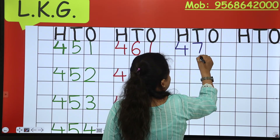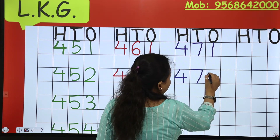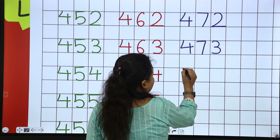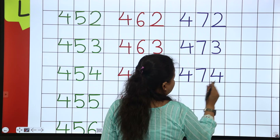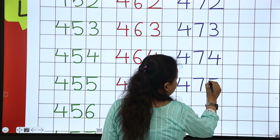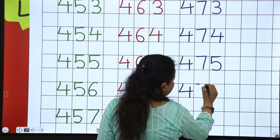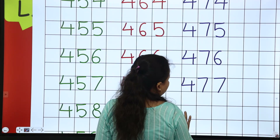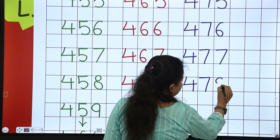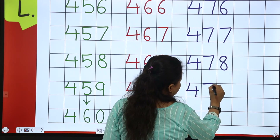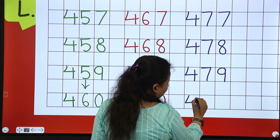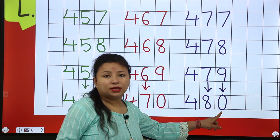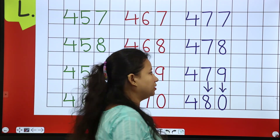471, 472, 473, 474, 475, 476, 477, 478, 479. The next number is 480 — after 7, 8, 0. Now next line starts with 481.